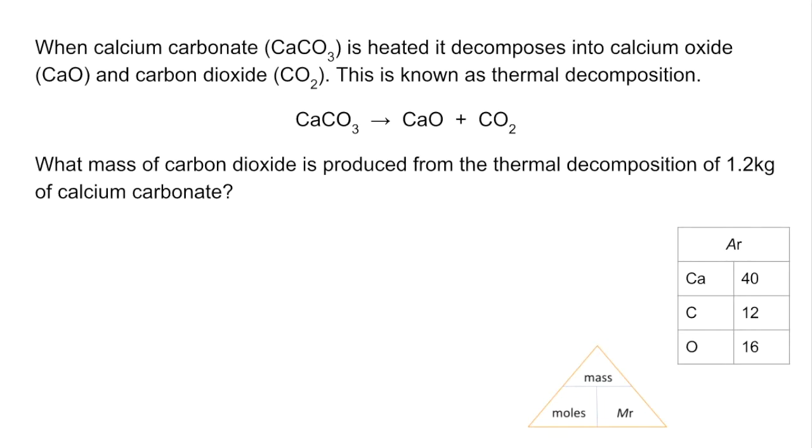So calcium carbonate when it's heated decomposes into calcium oxide and carbon dioxide - that's known as thermal decomposition. There's the chemical equation for the reaction: CaCO3 going to CaO and CO2. The question is, what mass of carbon dioxide is produced from the thermal decomposition of 1.2 kilos of calcium carbonate?